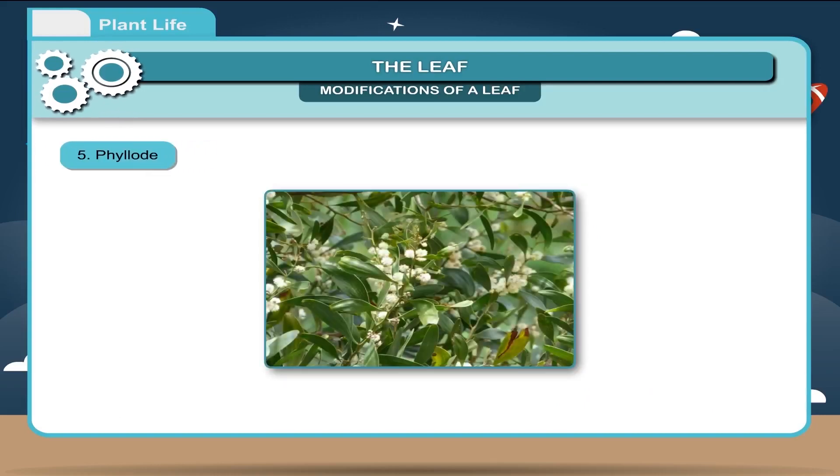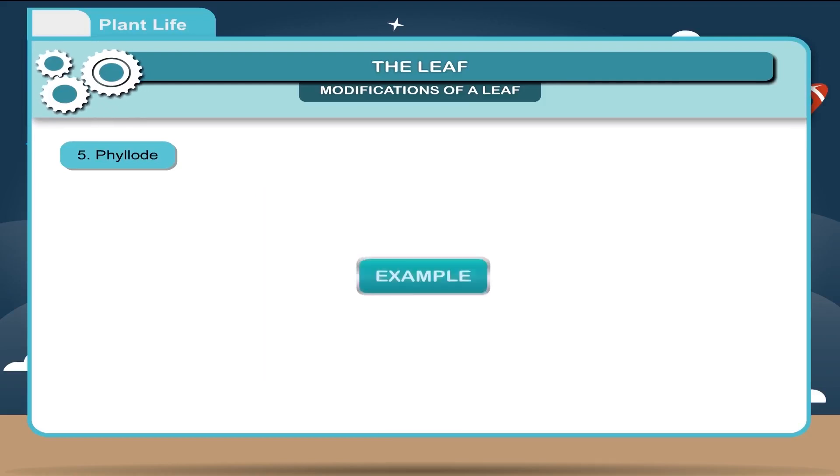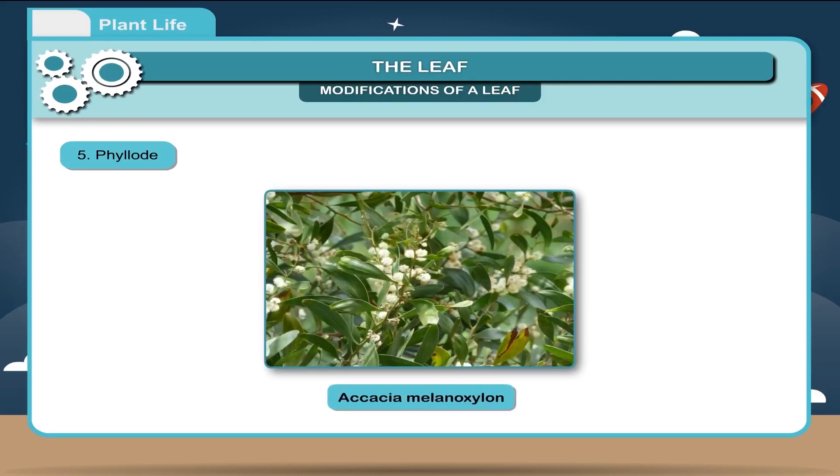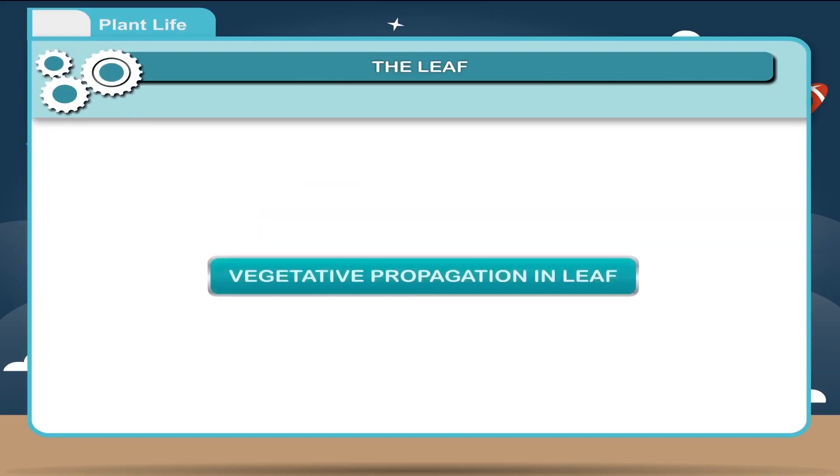Fifth, phyllode. Sometimes, the leaf petiole is modified into flattened, green, leaf-like structure called phyllode. It carries out photosynthesis. Example: acacia melanoxylon.